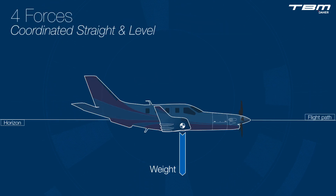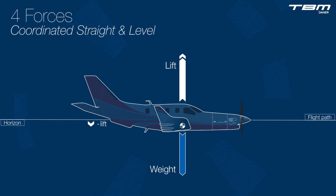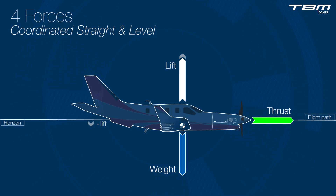Weight always pulls the aircraft towards the center of the earth. Counteracting weight is lift, which acts perpendicular to the relative wind, perpendicular to the flight path. Total lifting force is greater than weight, for it must also compensate for the negative lifting force created by the horizontal stabilizer. The thrust axes of most airplanes are not exactly aligned with the fuselage, which helps compensate for left-turning tendencies.